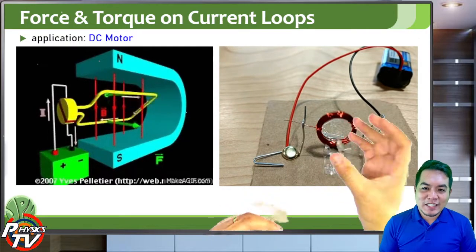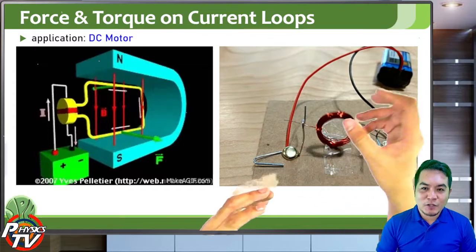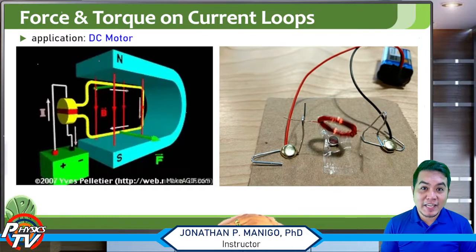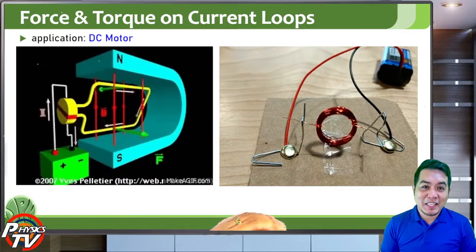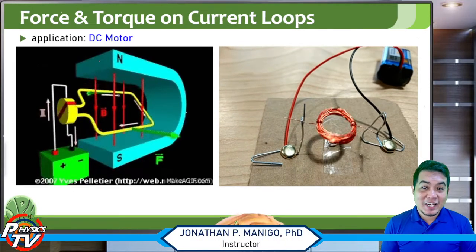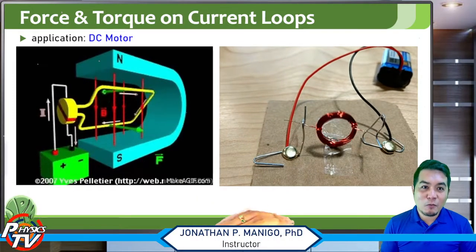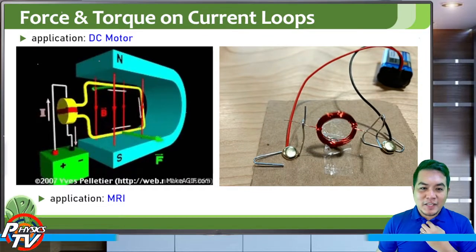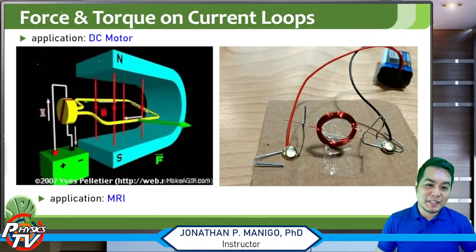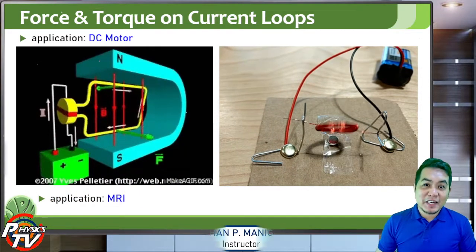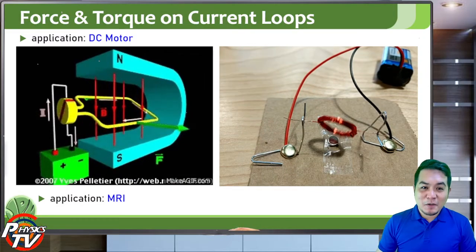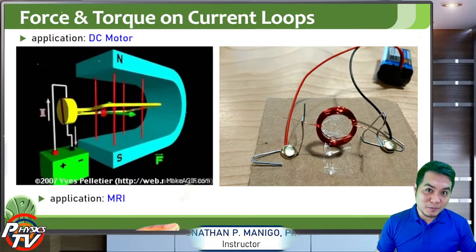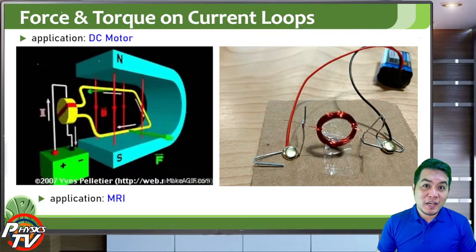This is the basic principle of any motor — in your cars, motorcycles, electric fans, any motor. The three basic elements are: a magnet, a battery to provide current, and a current loop or wire. Another application is magnetic resonance imaging (MRI), as mentioned in the previous lesson. We are made up of tiny magnetic dipole moments in our body, and those tiny magnets turn whenever they are exposed to a magnetic field.